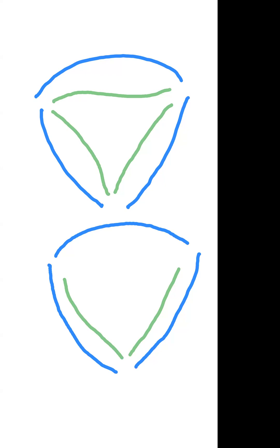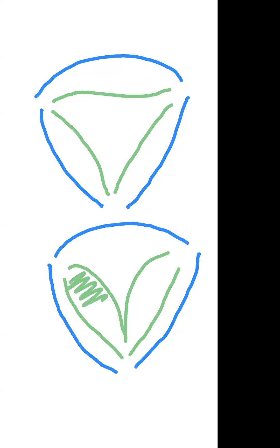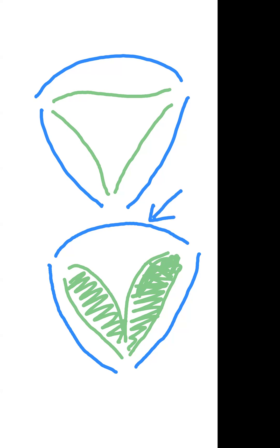Suppose I were to erase this part and draw another line over here in this manner, and take it deep down — does this now become a bicornuate uterus? No, it does not. However, what we are seeing on the HSG is just the cavity. And therefore, when you look at the cavity on any imaging modality, without paying attention to the external contour of the uterus, any uterus may be deemed to be septate or bicornuate, or it is going to be very difficult to make out exactly what kind of uterus it is.